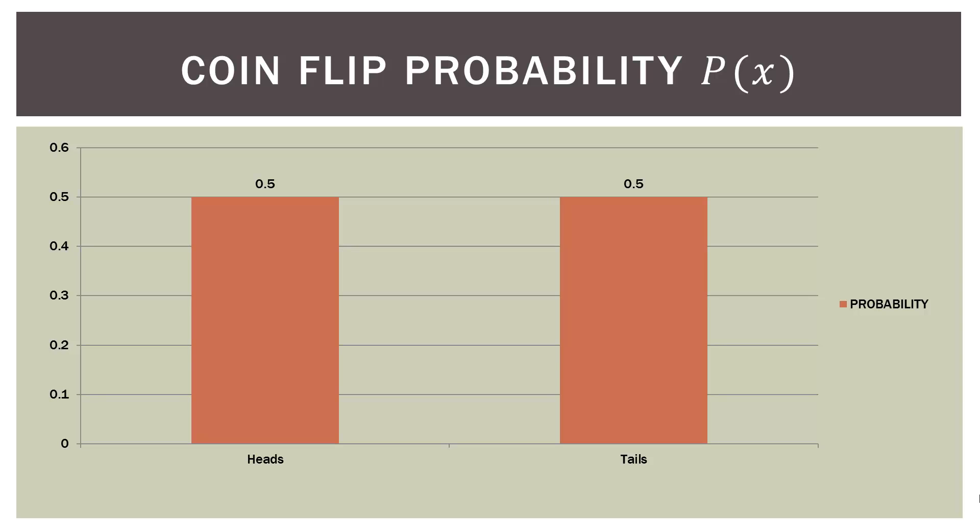Here is a chart showing our coin flip probabilities. The probability of heads is 0.5 and the probability of tails is also 0.5. And again, 0.5 plus 0.5 equals 1. This is just a very simple example to prepare you for more advanced ones later.